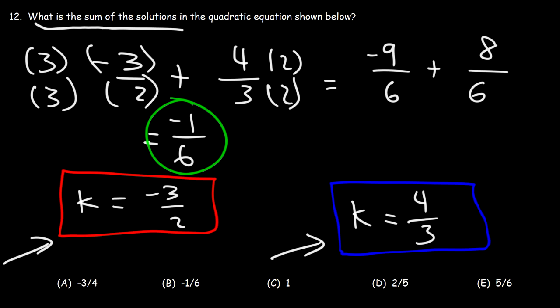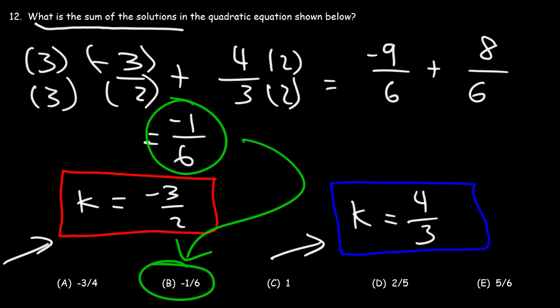Just one little negative sign can mess up the whole problem. But answer choice B is the correct answer. Good thing it's a multiple choice problem — I would have missed it.